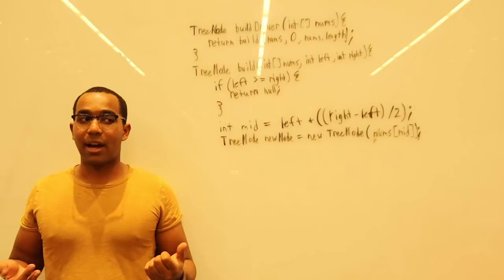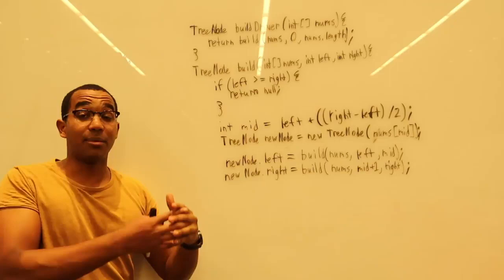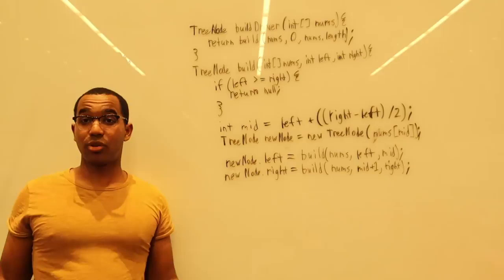So what we do here is we populate the left subtree. We say left is the left boundary. The middle is the new right boundary. And then the left subtree will come back with a balanced tree generation from its subsection.